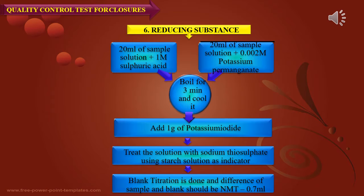For the reducing substances test, take 20 ml of sample solution with 1 molar sulfuric acid, and 20 ml of sample with 0.002 molar potassium permanganate. Both solutions are boiled for 3 minutes and cooled. Add 1 gram of potassium iodide and titrate with sodium thiosulfate using starch solution as indicator. A blank titration is done and the difference between sample and blank should not be more than 0.7 ml. This is essentially an oxidation titration method.